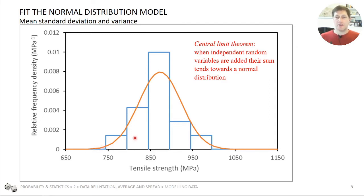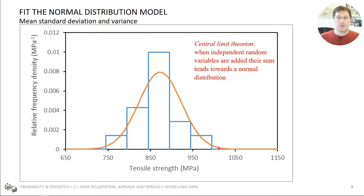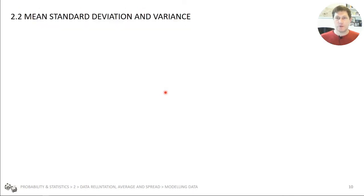We can take our data, the histogram, and fit the normal distribution to it. That will tell us specifically what the normal distribution of our data is. We can then consider whether those parameters will be representative of the mean and standard deviation of the population — all the steel samples in the world. So what does it mean to fit the normal distribution? First of all, we fit the mean.